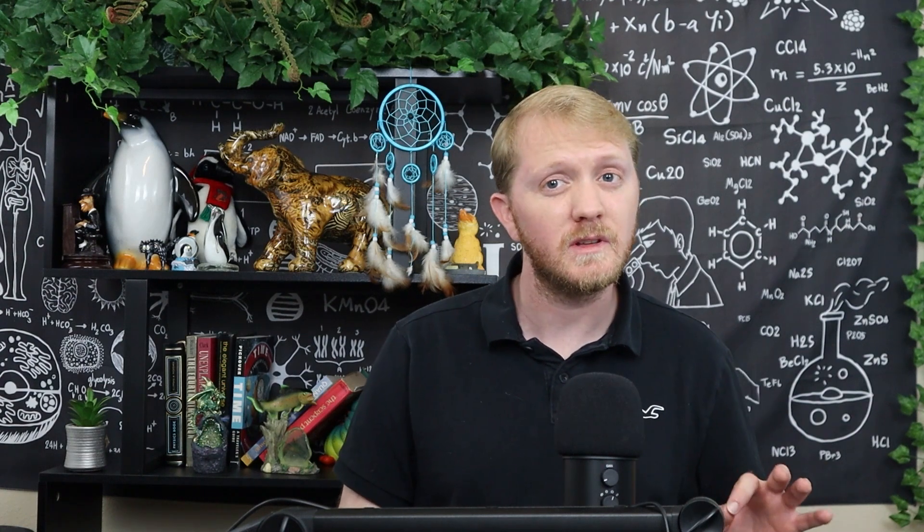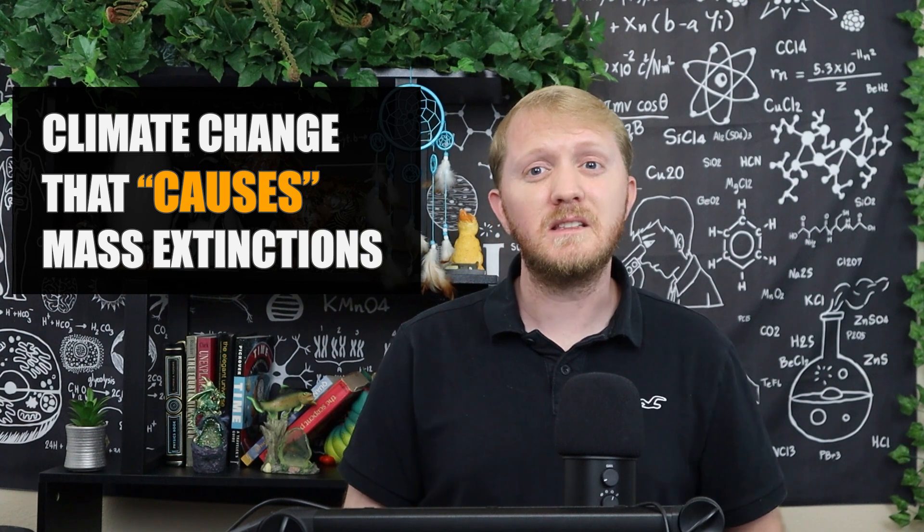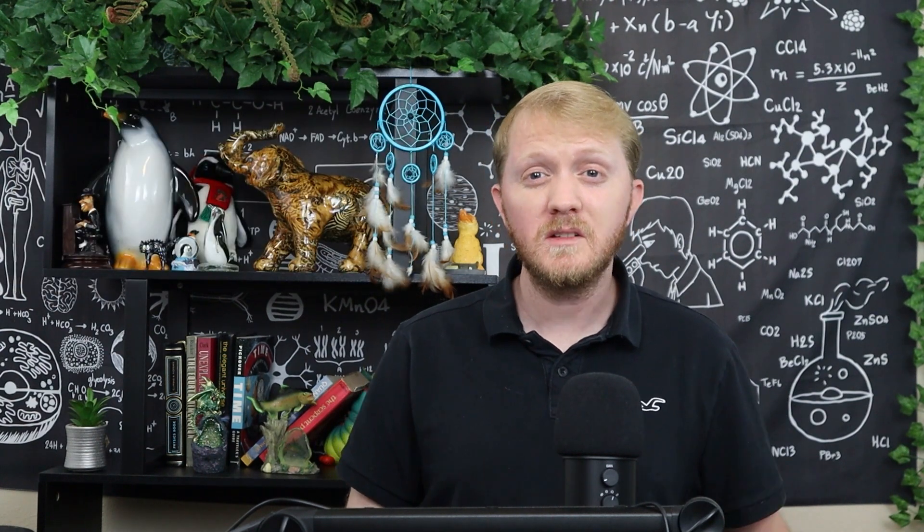So yes, we can see that global climate change is a natural thing that happens throughout time—it's happened many times. The only difference between global climate change that occurs naturally and global climate change that occurs due to mass extinctions is the intensity of the change and how long that change takes. The global warming that happened during the Paleocene-Eocene Thermal Maximum happened over hundreds of thousands of years.